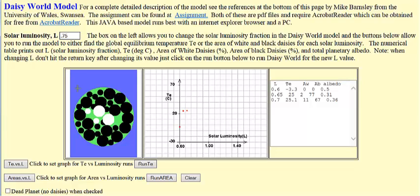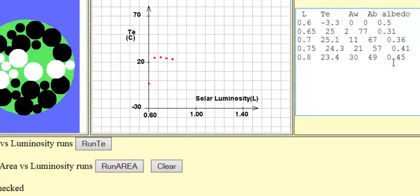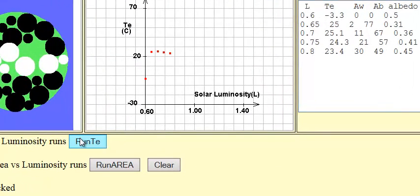0.75. Give you a chance to write these numbers down over here. 0.80. Next one is 0.85. Let's hit 0.80. We have 23.4, 30 for white daisies, 49, and 0.45 is 0.85.